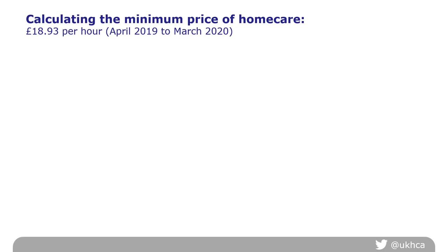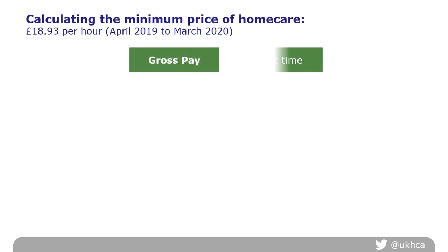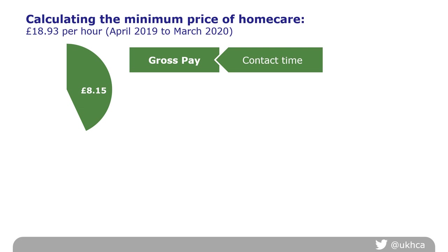Let's have a look at how we build up the minimum price for home care. Using UKHCA's costing model, we reach a figure of £18.93 as the minimum hourly price from April 2019. We start by paying the care worker for delivering care in somebody's home — the contact time. Care workers must receive at least the statutory national living wage if aged 25 and above, or the national minimum wage. Looking at the average age profile of the workforce, the cost to employers is going to be at least £8.15 per hour.